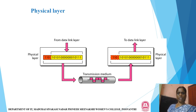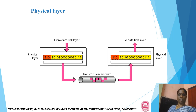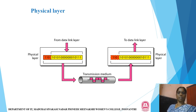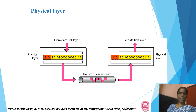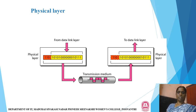This is a diagrammatic representation of the physical layer from the sender side and the receiver side. From the sender side, the data link layer passes information to the physical layer, where it is stored in bit format — zeros and ones. These bits are transferred through the transmission medium, such as twisted pair cable. On the receiver side, the bit signal is received and converted back into bit information.